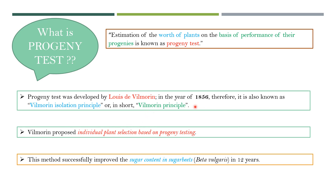In short, the Villimorin principle: Villimorin proposed individual plant selection based on progeny testing. By applying this method, he successfully improved sugar content in sugar beets in his 12 years of experiment. He also applied this approach in improvement of wheat varieties, but this experiment was ineffective because of wheat's polygenic nature.